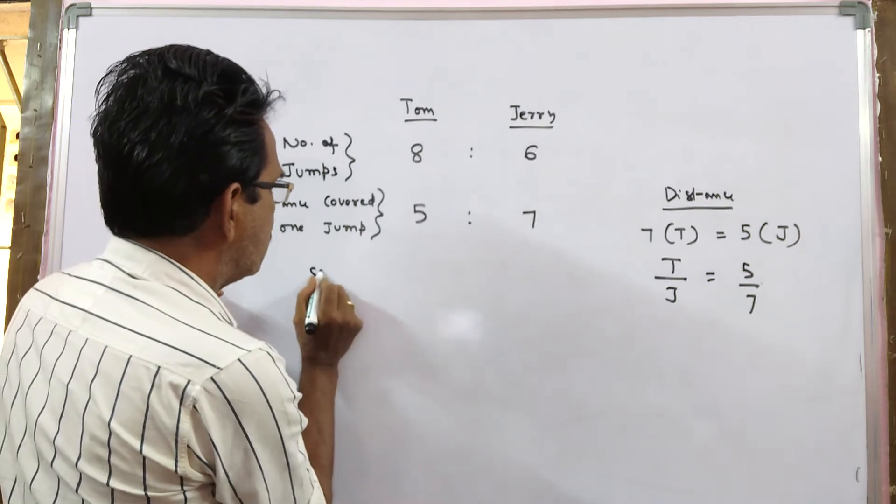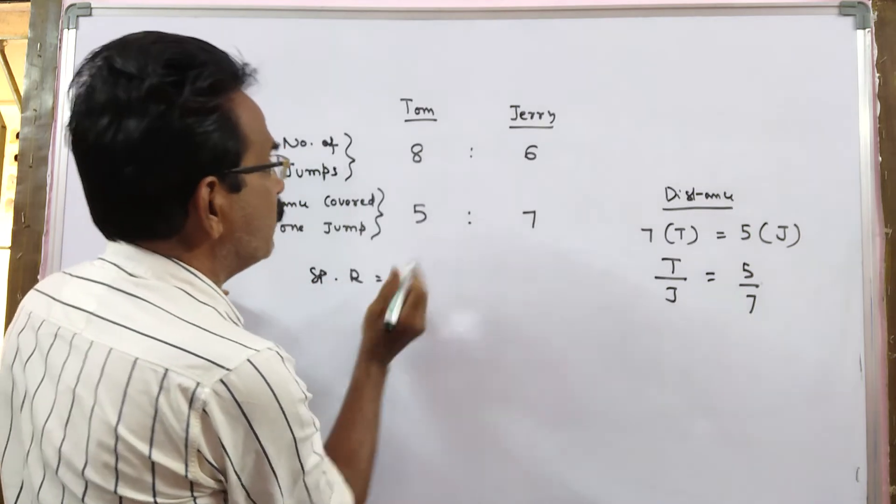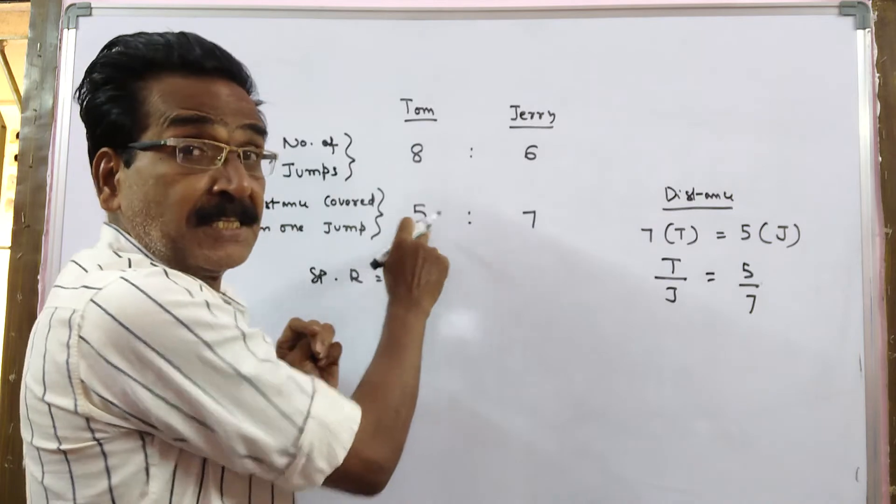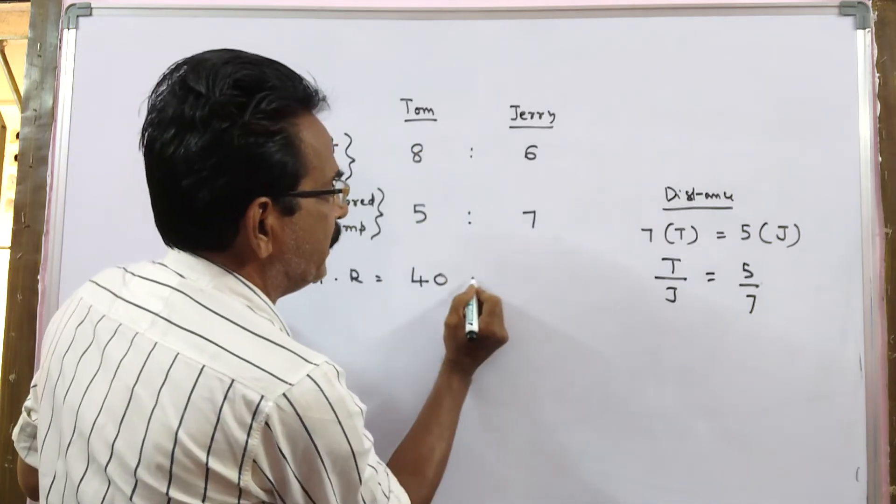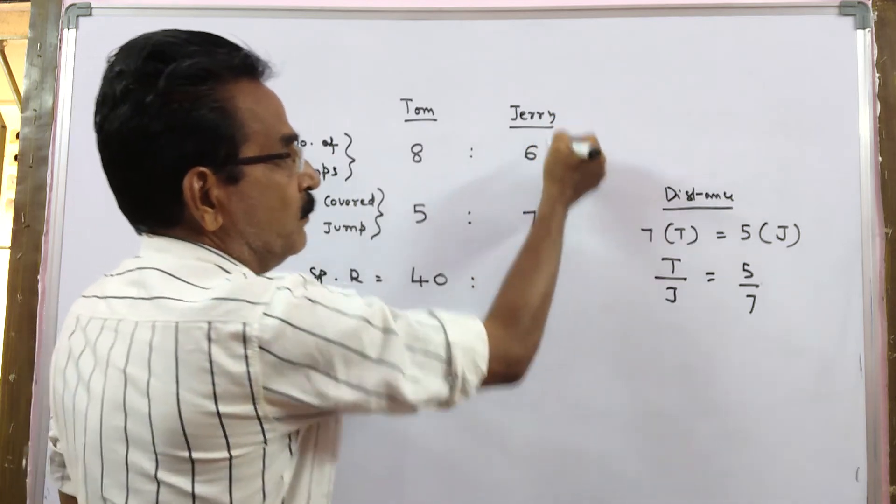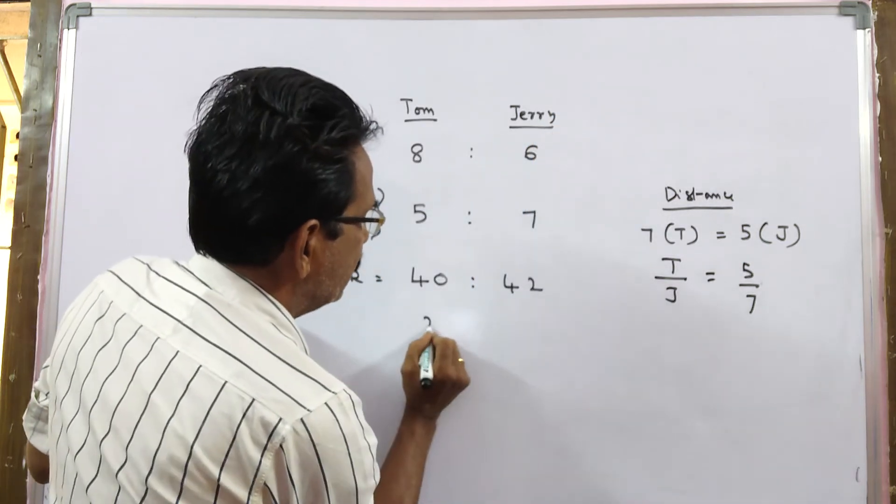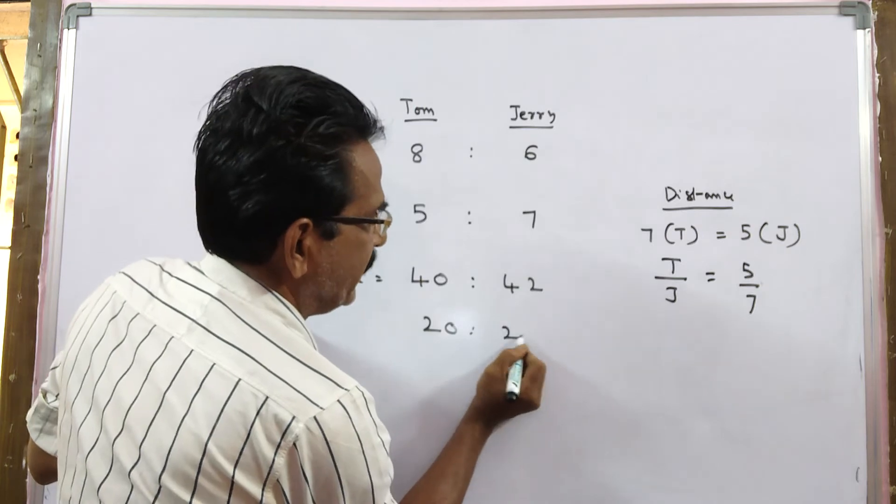Now, the speed ratio. Now, the speed ratio is equal to 8 jumps. In each jump 5 meters, 8 times 5. Tom goes 40 meters. In the same time, Jerry goes 42 meters, 20 to 21.